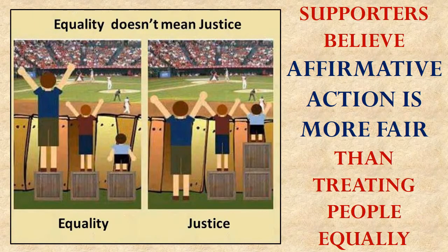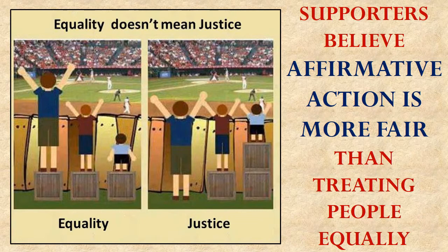Groups that support affirmative action believe that it's actually more fair than simply treating everybody equally. You can see in this illustration how they might think about this. On the left, everyone is treated equally, given the same size box to stand on to look over the fence — but some people are taller, some shorter. So what a supporter of affirmative action might do is redistribute the boxes so that everybody can see over the fence equally. In their mind, that's better than equality — that's what we should be seeking, some way to make society fair, even if different people get different benefits along the way.